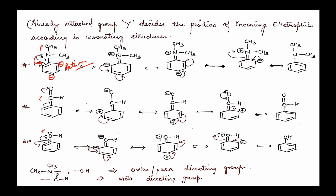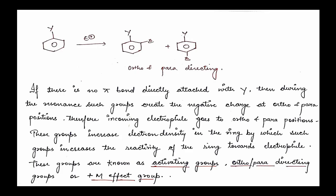When you have the lone pair, it goes into resonance, and the electron density increases especially at ortho and para positions. So the electrophile goes to ortho and para. Summarizing the three groups: dimethylamine (NMe₂), because it donates its lone pair electron density to benzene, is an activating group. CHO was pulling electron density — making benzene deactivated and ortho/para electron-deficient — so it is a deactivating meta-directing group. OH donated its lone pair, so it is an activating ortho-para directing group. When a group activates benzene, we say it has a plus M effect — the positive mesomeric effect.